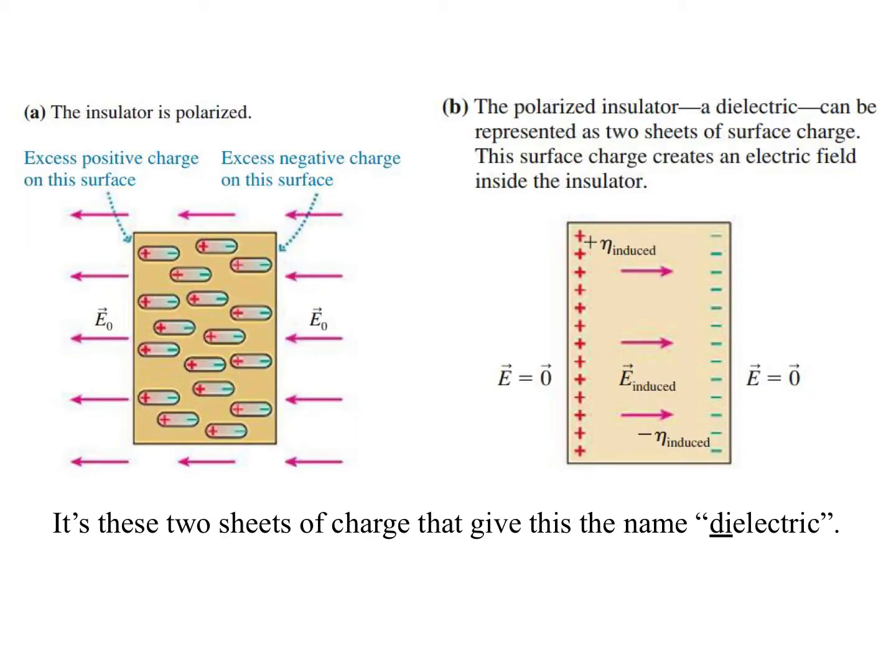When we put the dielectric in the capacitor and put charge on the capacitor, we create an electric field. And because of that, the insulator ends up getting polarized. That is, some of the positives move along the field lines towards the positive end, and some of the negatives move along the field lines to the negative end.